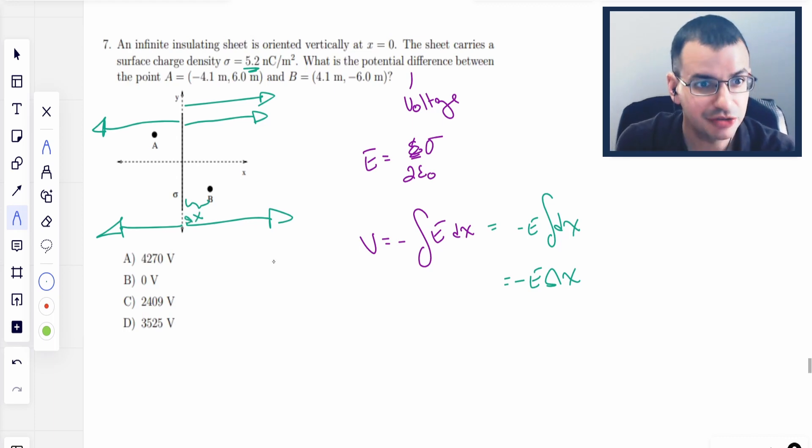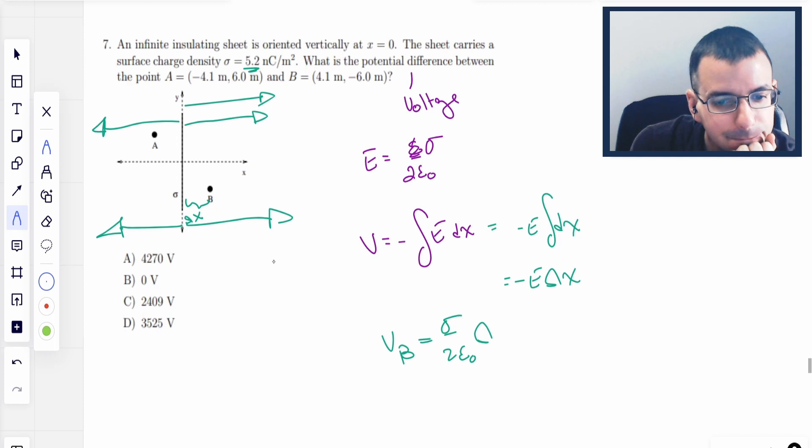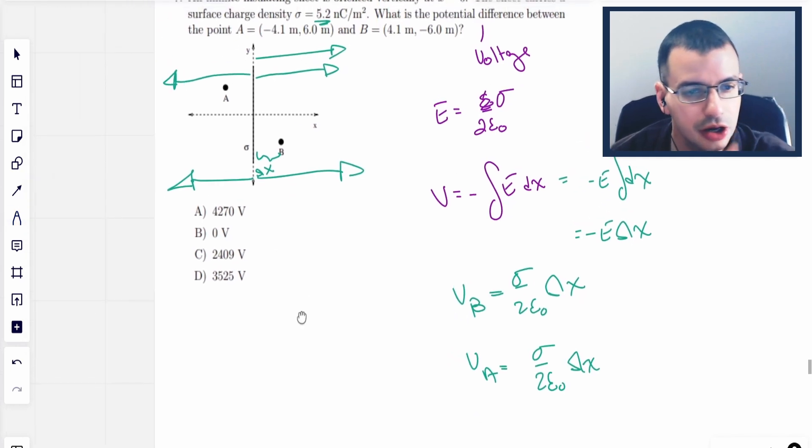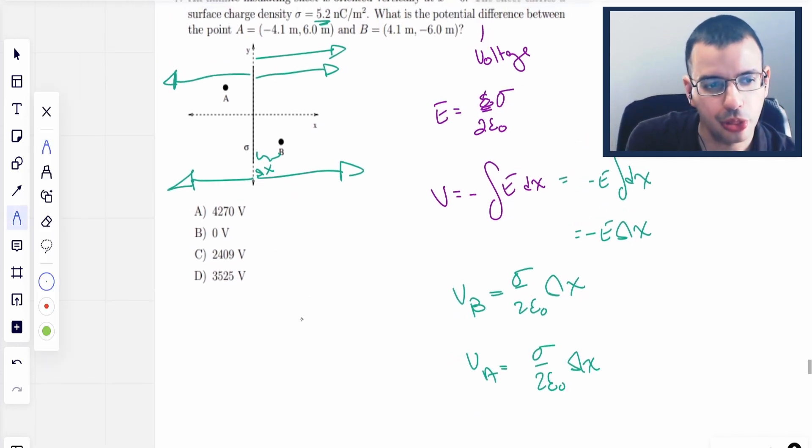So what is the potential difference between these? So VB is going to be E, which is sigma over 2 epsilon naught delta x. So that distance. And then VA is also going to be sigma over 2 epsilon naught delta x.